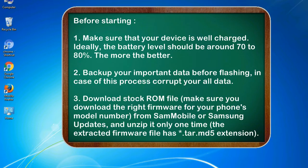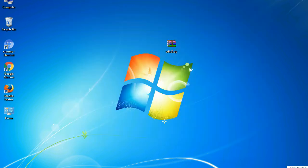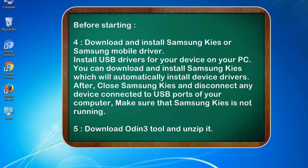3. Download the stock ROM file. Make sure you download the right firmware for your phone's model number from Sammobile or Samsung Updates, and unzip it only one time. The extracted firmware file has a .tar.md5 extension. 4. Download and install Samsung KIES or Samsung mobile driver to install USB drivers on your PC. Close Samsung KIES and disconnect any devices from USB ports, making sure KIES is not running. 5. Download Odin 3 tool and unzip it.